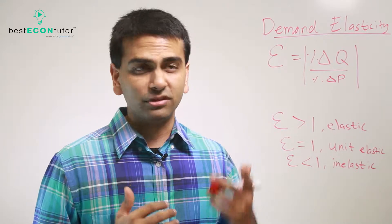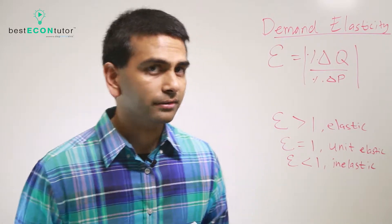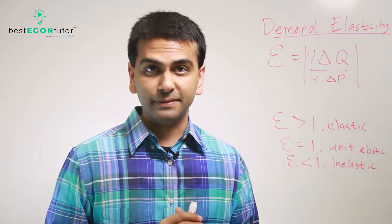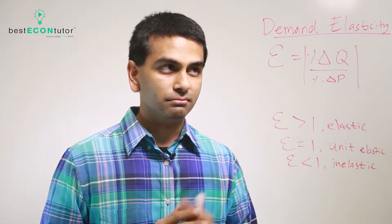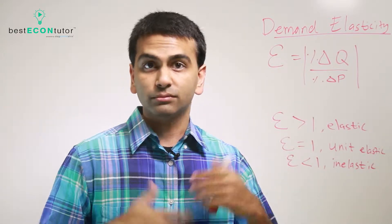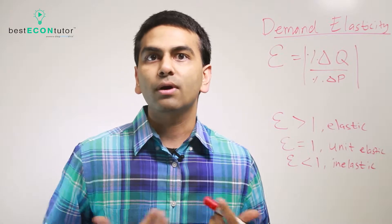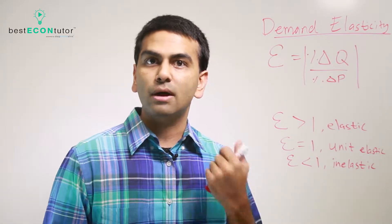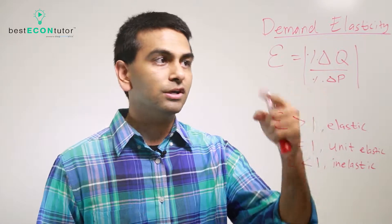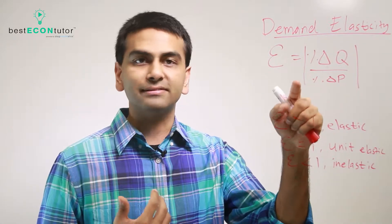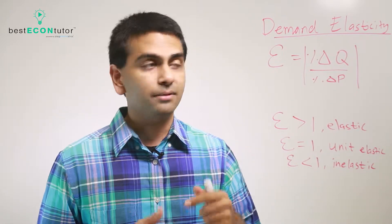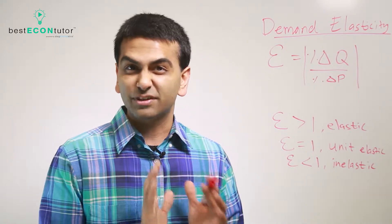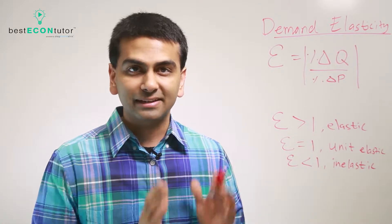Notice that some instructors use absolute values in the formula and some don't — make sure which one yours is using. The reason it really doesn't matter for demand elasticity is that without absolute values, it's always going to be negative because of the law of demand: if price goes up, you get a positive denominator but a negative numerator. Either way, demand always slopes down. But for other elasticities, positive versus negative does matter.